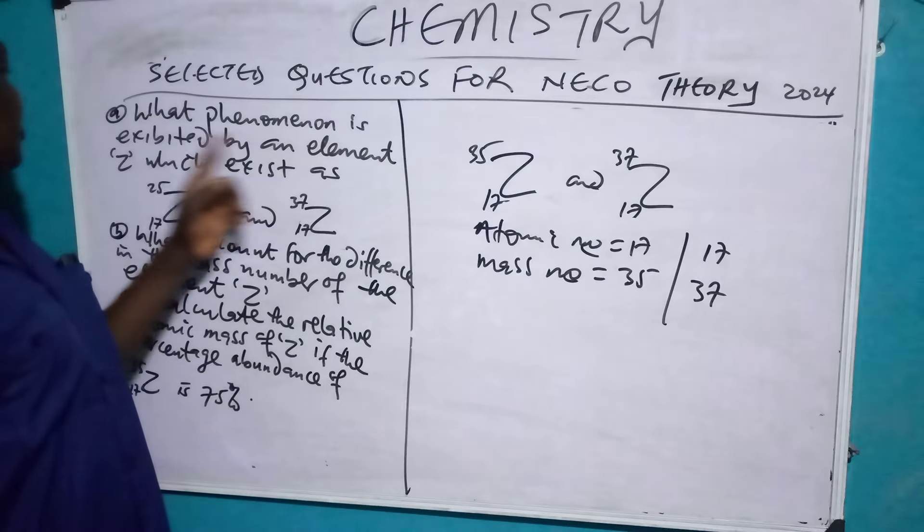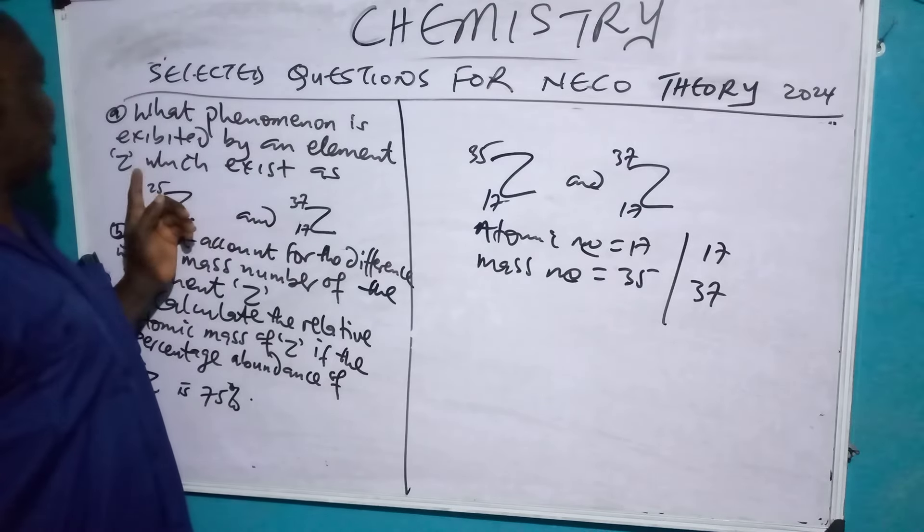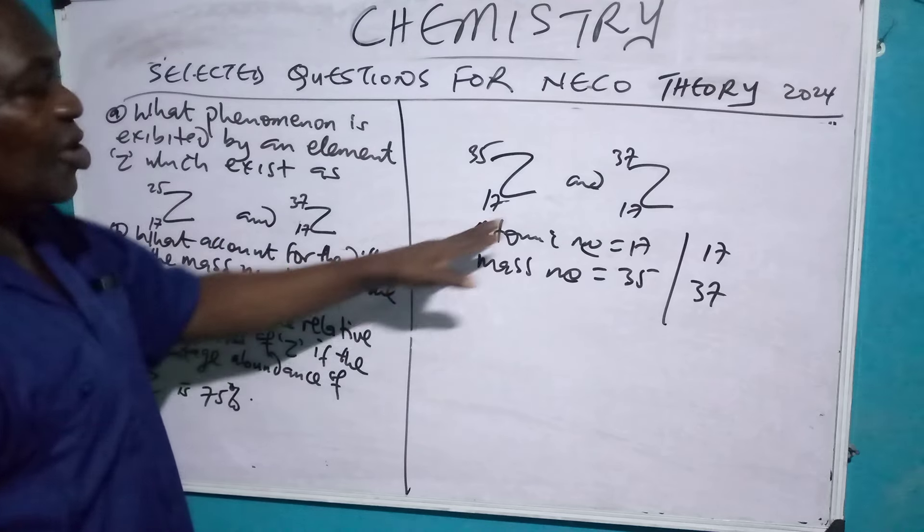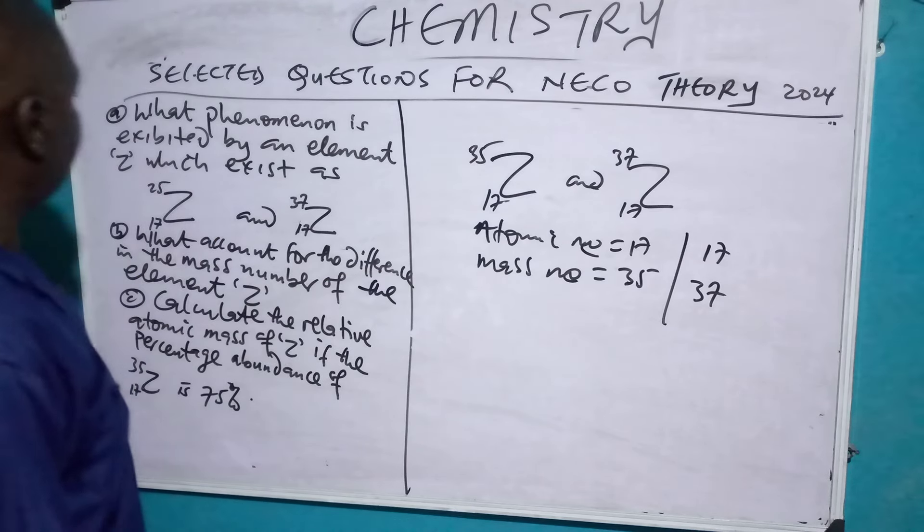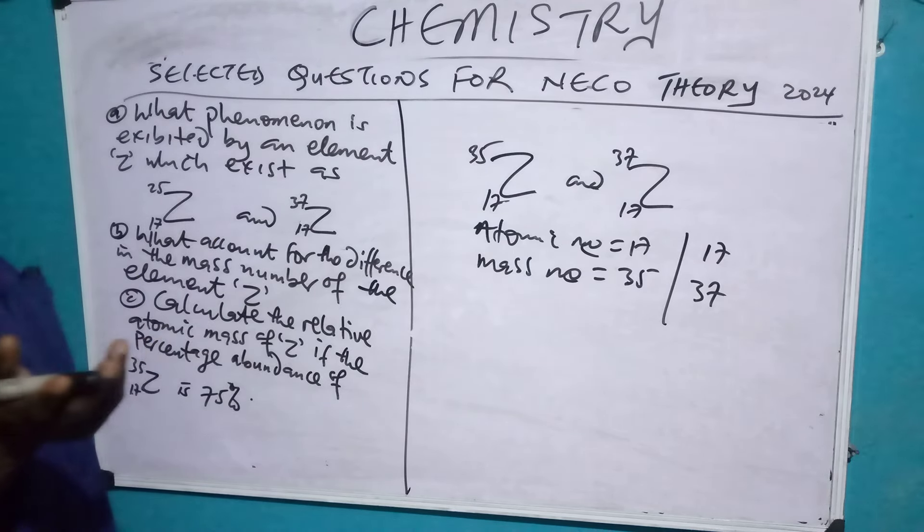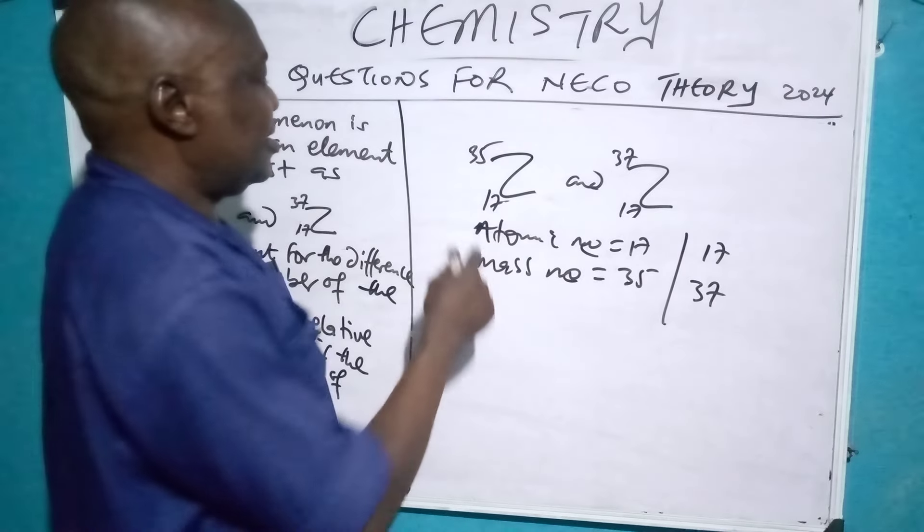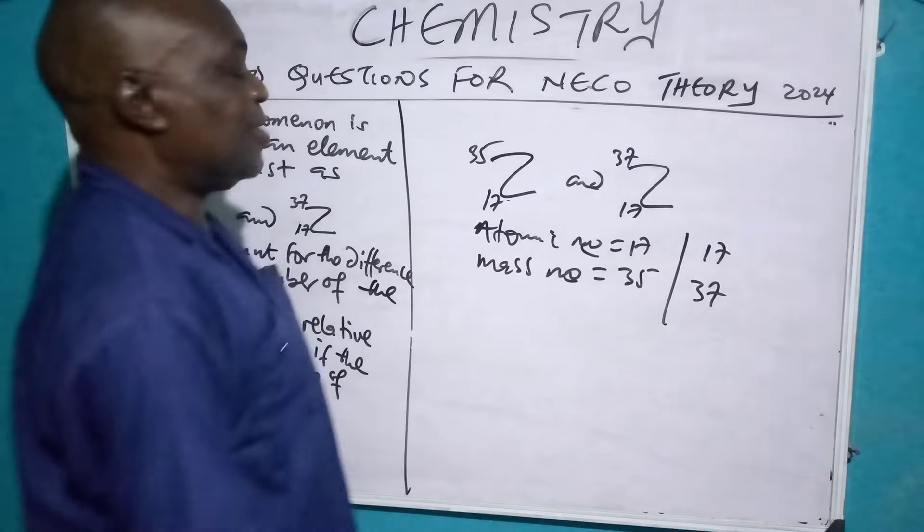What phenomenon is exhibited by an element which has this? So, the phenomenon is known as isotope. Now, the property is exhibited by elements that have the same atomic number, the different mass number.